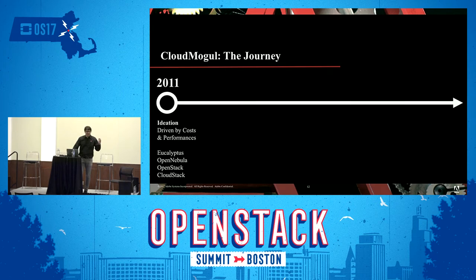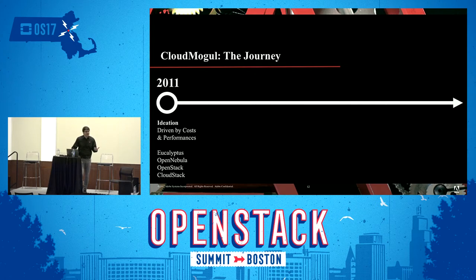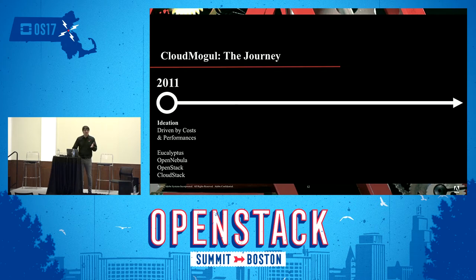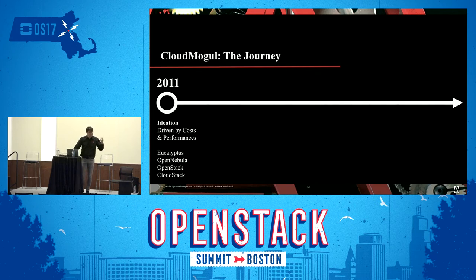The cloud journey started in 2011 with an ideation mostly driven by cost and performance. At the time, public cloud was definitely already a standard, but there were a lot of changes — EBS was just starting for Amazon, VPC was just beginning to emerge. On the private cloud side, there were a lot of open source projects coming up: Eucalyptus, OpenNebula, OpenStack, CloudStack. Everybody was thinking about it.